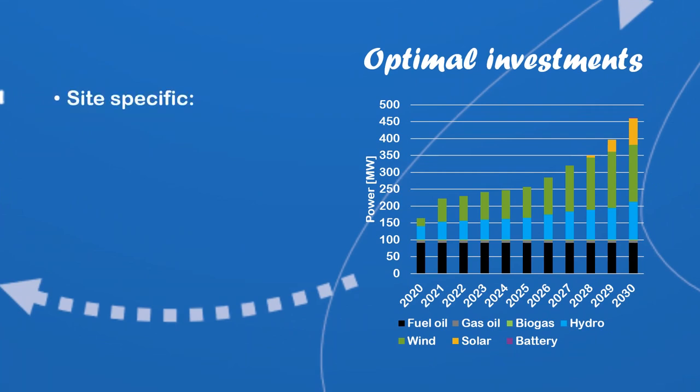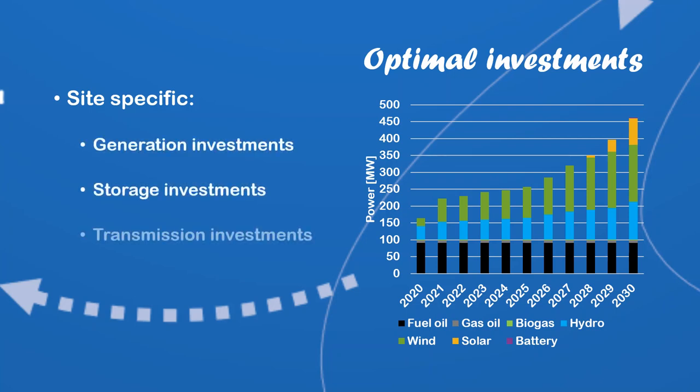From Balmorell we can see the site-specific investments in generation, storage and transmission. The graph shows the accumulated optimal generation capacities in one of the tested scenarios. While this gives a good indication of the capacity needed, there is a disadvantage that the capacity at a specific site can increase year by year, since it's an optimization.